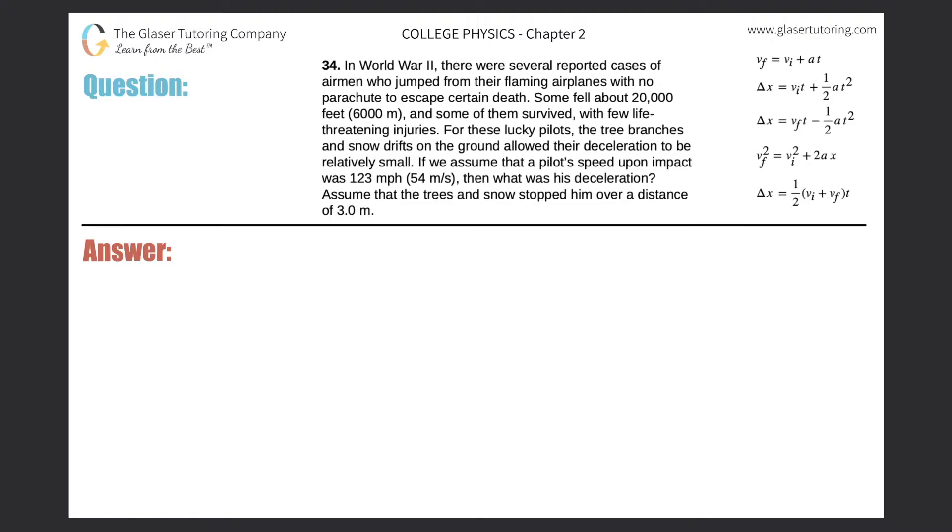Number 34. In World War II, there were several reported cases of airmen who jumped from their flaming airplanes with no parachute to escape certain death. Some fell about 20,000 feet, or 6,000 meters, and some of them survived with few life-threatening injuries.